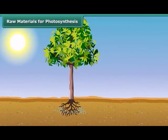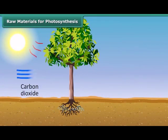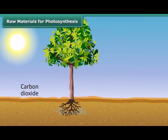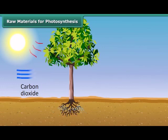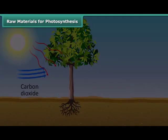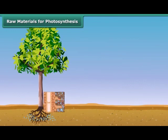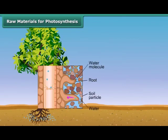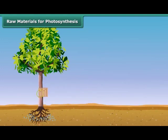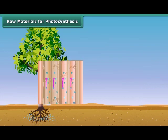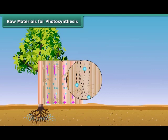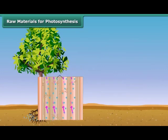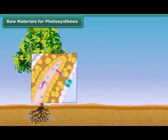In plants, water, minerals, and carbon dioxide are raw materials for the synthesis of food. Water and dissolved minerals are absorbed directly from the soil through roots and sent to the leaves by means of many small vessels present in the stem. These vessels run throughout the root, the stem, the branches, and the leaves, forming a continuous path for water and minerals to reach the leaf.